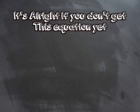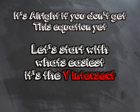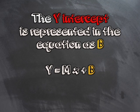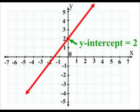It's alright if you don't get this equation yet. Let's start with what's easiest — it's the y-intercept. The y-intercept is representing the equation as b. It's where the line crosses the y-axis, and you make your first mark — you see.